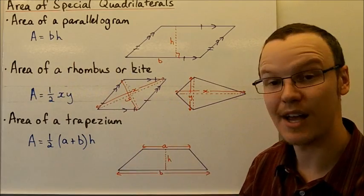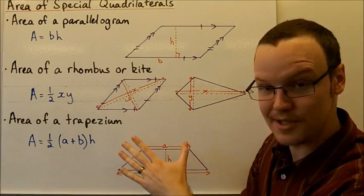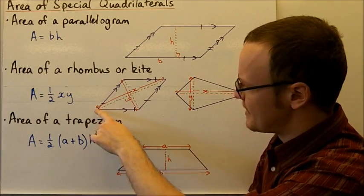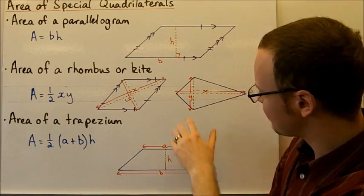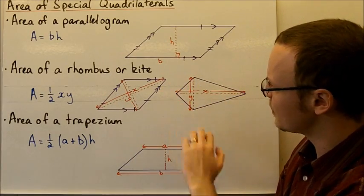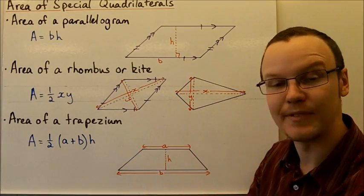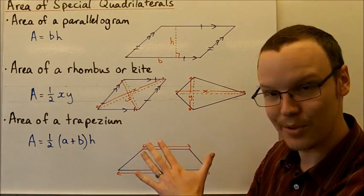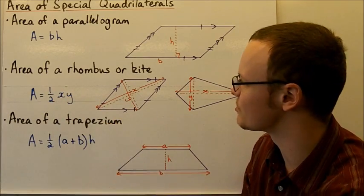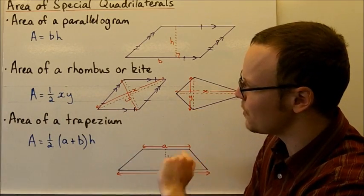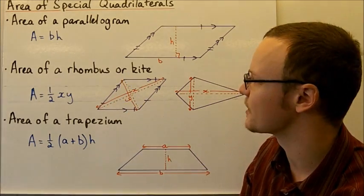Looking at rhombuses and kites — if we look at the diagonals and name them, one diagonal being X and another diagonal being Y, and doing the same with a kite, one diagonal being X and one diagonal being Y — the area of the rhombus or the kite is going to be a half times X times Y. So a half multiplied by one diagonal and multiplied by the length of the other diagonal.